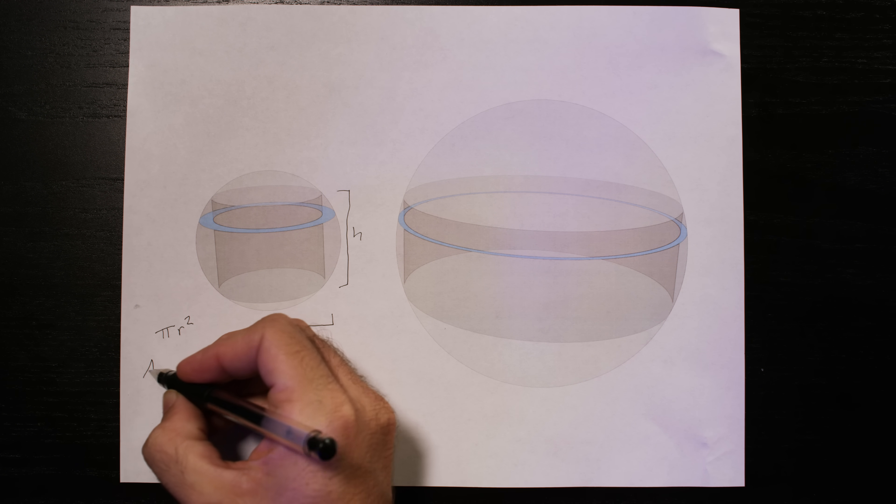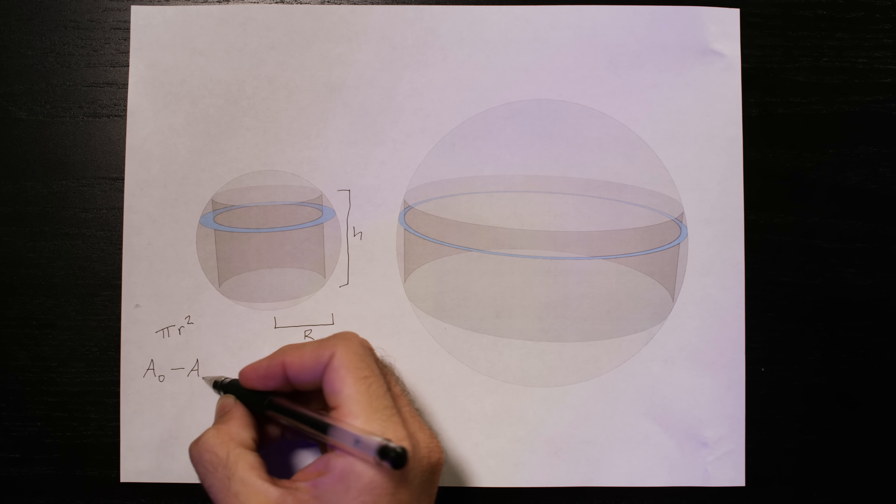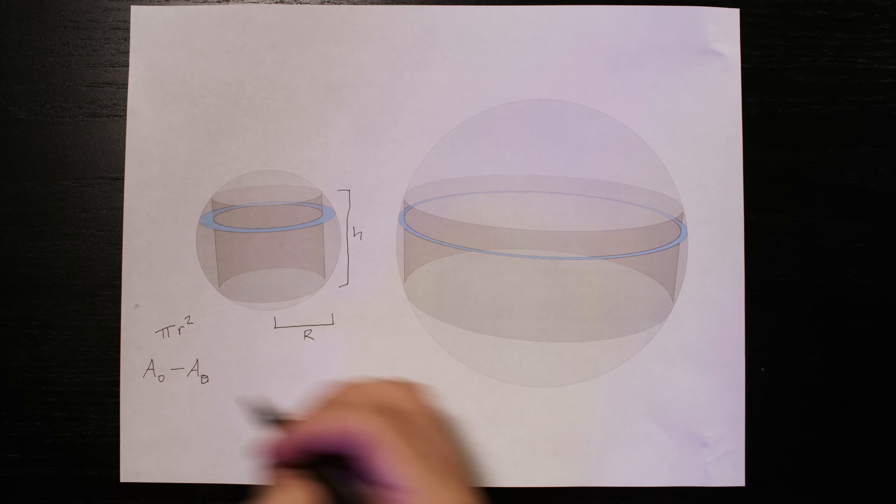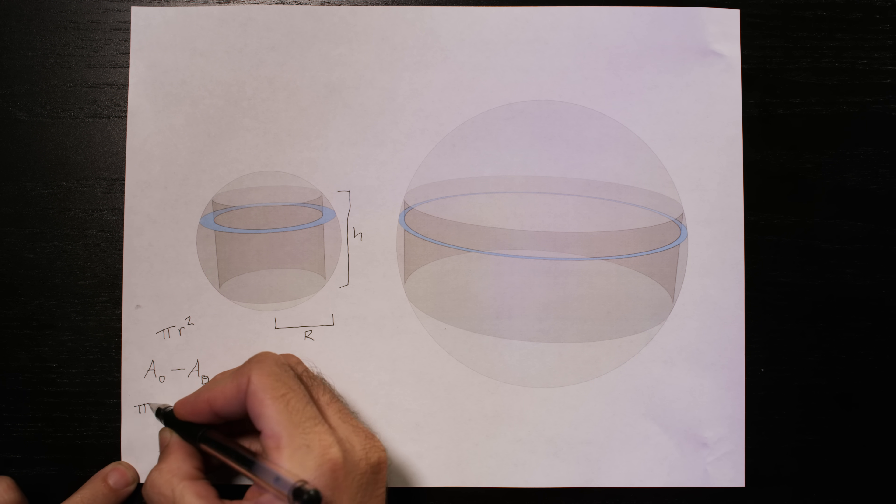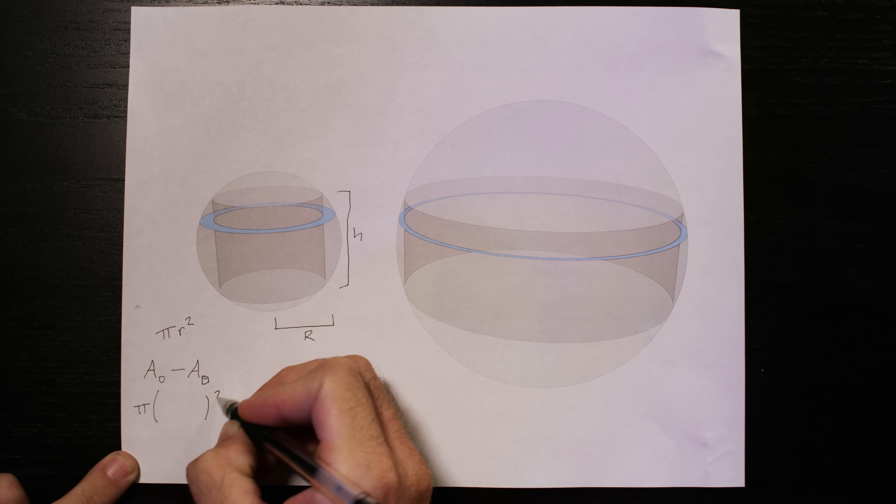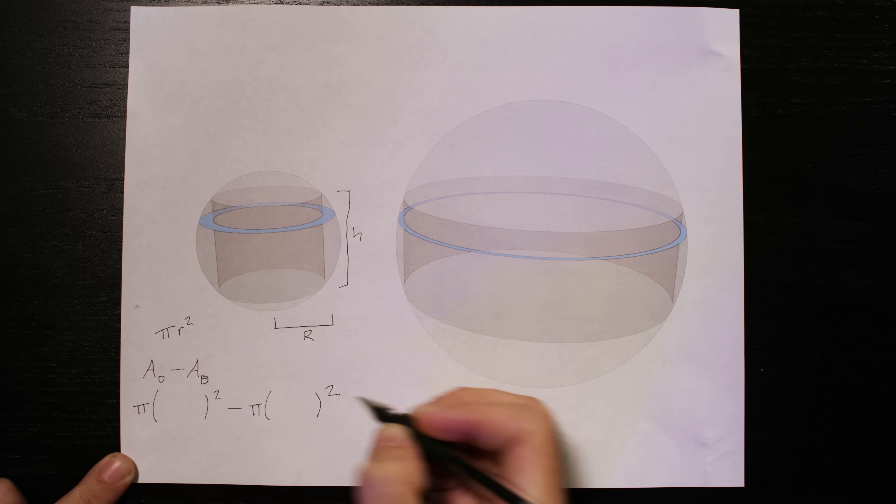So if we want to find the area of the sphere's cross section and subtract the area of the cylinder's cross section, draw a little picture of a cylinder here, all we need to do is take pi, multiply it by the radius of the sphere cross section, square that, and then subtract pi times the radius of the cylinder squared.